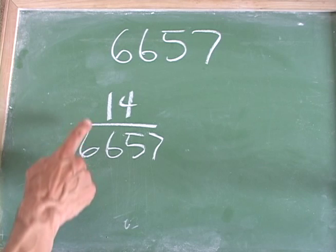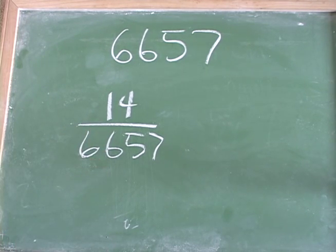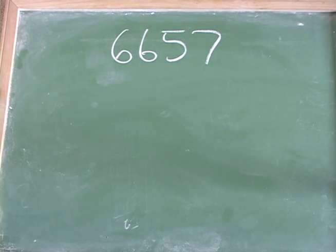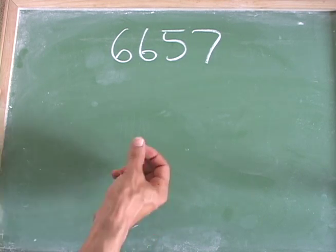Well, maybe you're taking a test and you've got a fraction like 14 over 6657, and of course your teacher says to reduce to lowest terms or simplify your answer. And you know that 14 is divisible by 7, but you're not sure if 6657 is divisible by 7. Of course, you can always do long division, but you can take this approach.